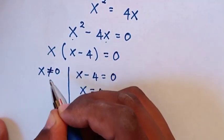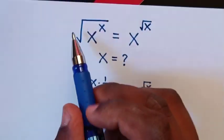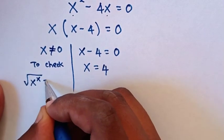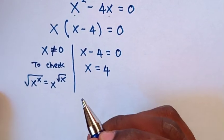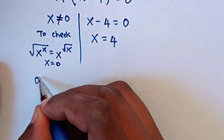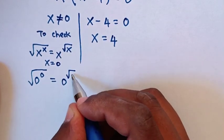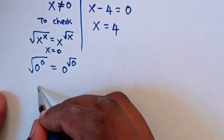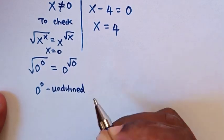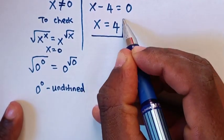From here, x cannot be equal to 0. Because when we check our original problem — square root of x power x is equal to x power square root of x — if x is equal to 0, we substitute to get 0 power 0, which is undefined.